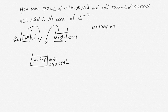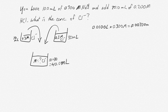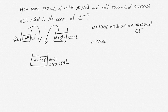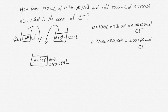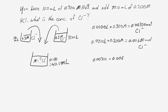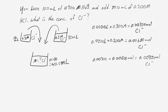We have 10 milliliters, which is 0.0100 liters, times 0.300 molar, giving us 0.00300 moles of chloride ion from the sodium chloride solution. We have 0.0300 liters of HCl times 0.200 molar, which gives us 0.00600 moles of Cl⁻ from the HCl. When we mix them together, we combine those amounts: 0.00300 plus 0.00600 moles adds up to 0.00900 moles Cl⁻ in total.